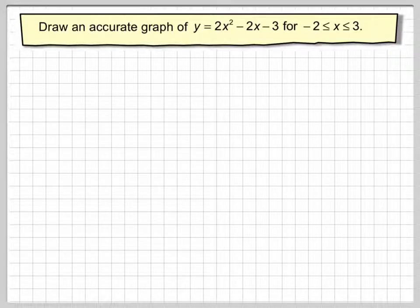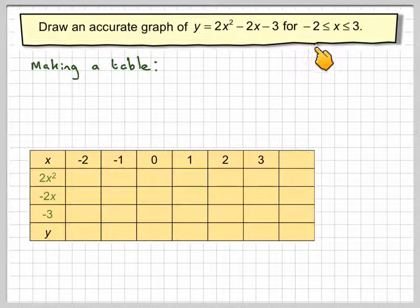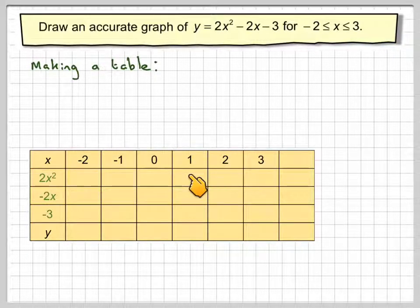The main method to use if we've got no technology is to make a table. We're asked to draw it from minus 2 to 3, so along here we put the x values: minus 2, minus 1, 0, 1, 2, 3.